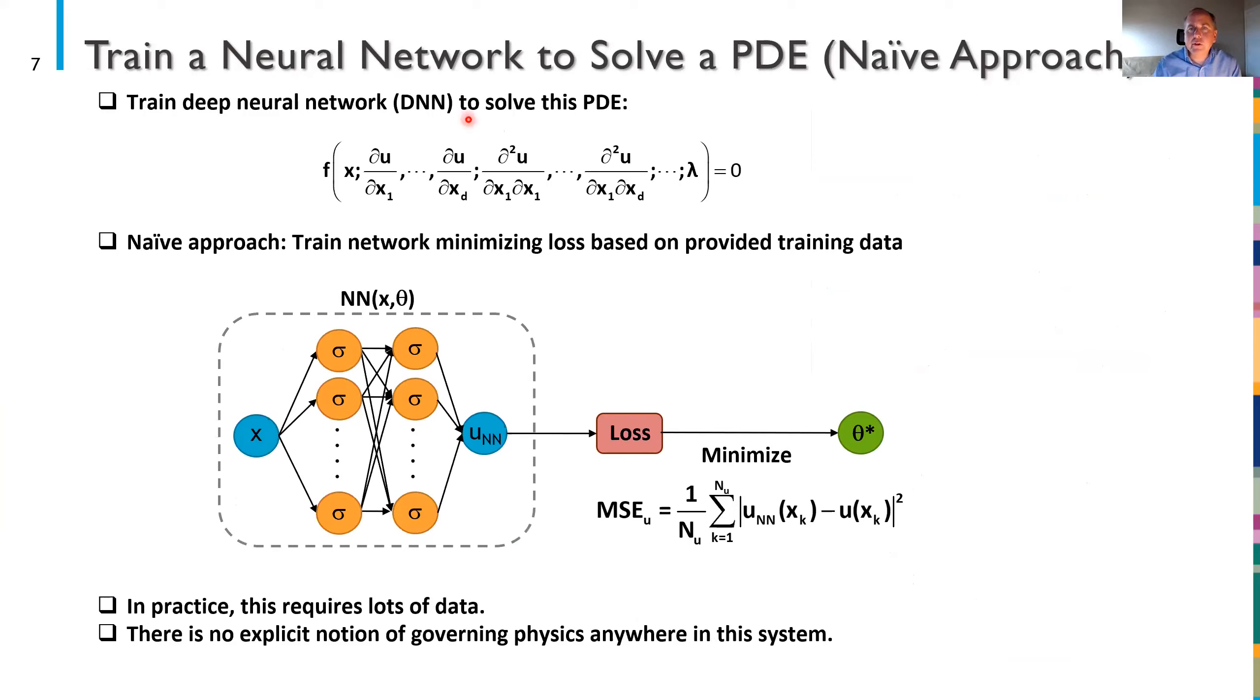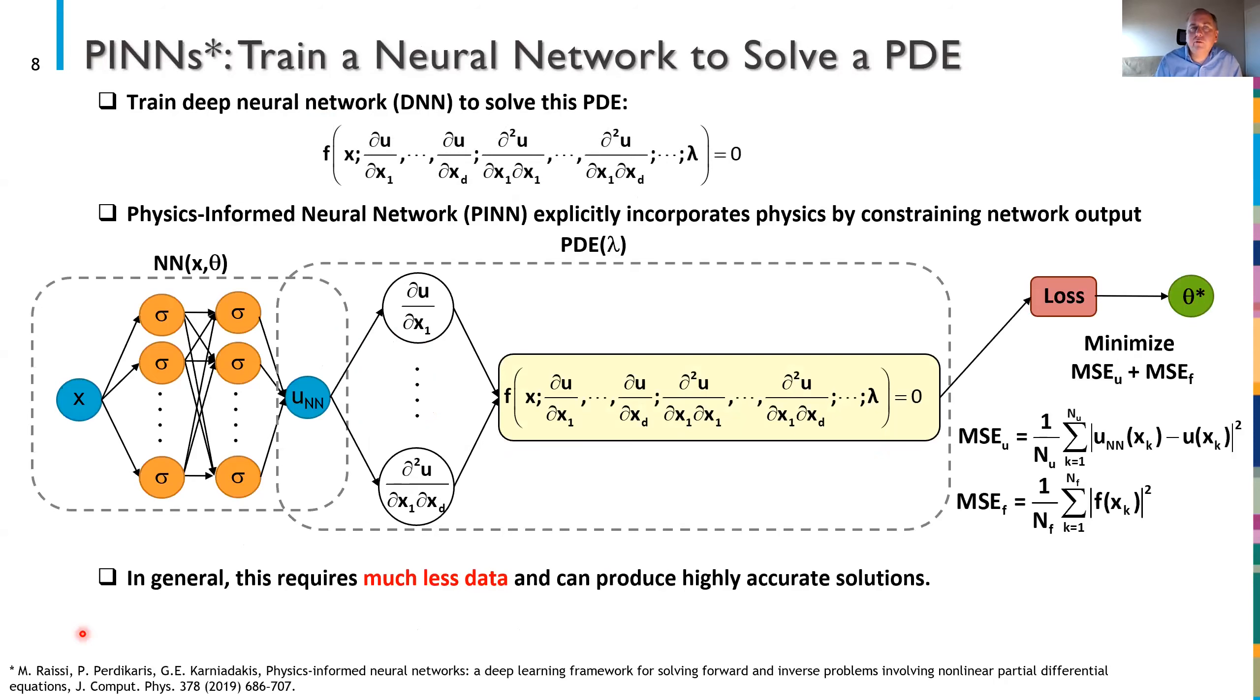If I want to train a neural network to solve a PDE and let's suppose this is the PDE I want to solve parameterized by some parameter or set of parameters λ then a very naive approach to training a neural network, here's a cartoon of a neural network, a naive approach to doing this would be to minimize the loss based on some provided training data. In other words I'll take the mean squared error in u and I'll train my neural network to minimize this. In practice it turns out this requires lots and lots of data. Moreover there's no kind of guarantees of accuracy or physical correctness in the response of the neural network. The thing that should bug you almost immediately is that in this diagram even though I know a governing PDE I've not utilized that anywhere there's no explicit notion of the governing physics anywhere in this system and so thus enter PINNs or physics-informed neural networks.